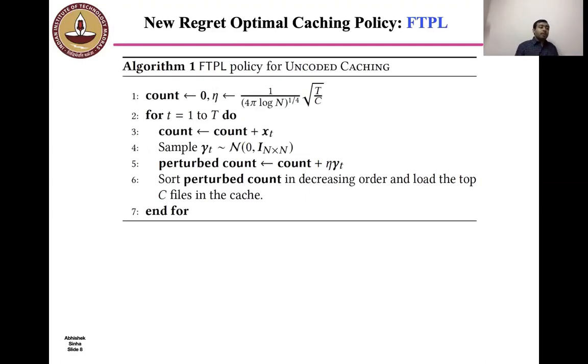We now propose a new follow the perturbed leader based caching policy. This is how it works. We first initialize an n-dimensional count vector which corresponds to the number of file requests corresponding to each file up to time t. Also, we set the variable leader to the value shown. At every slot t, we update the count vector as new file requests arrive. Then we perturb the count vector by adding Gaussian noise of variance ζ² to the count vector. The components of the Gaussian noise are assumed to be independent. So it is a white Gaussian noise. Finally, we load the cache with the C files having the highest perturbed count.